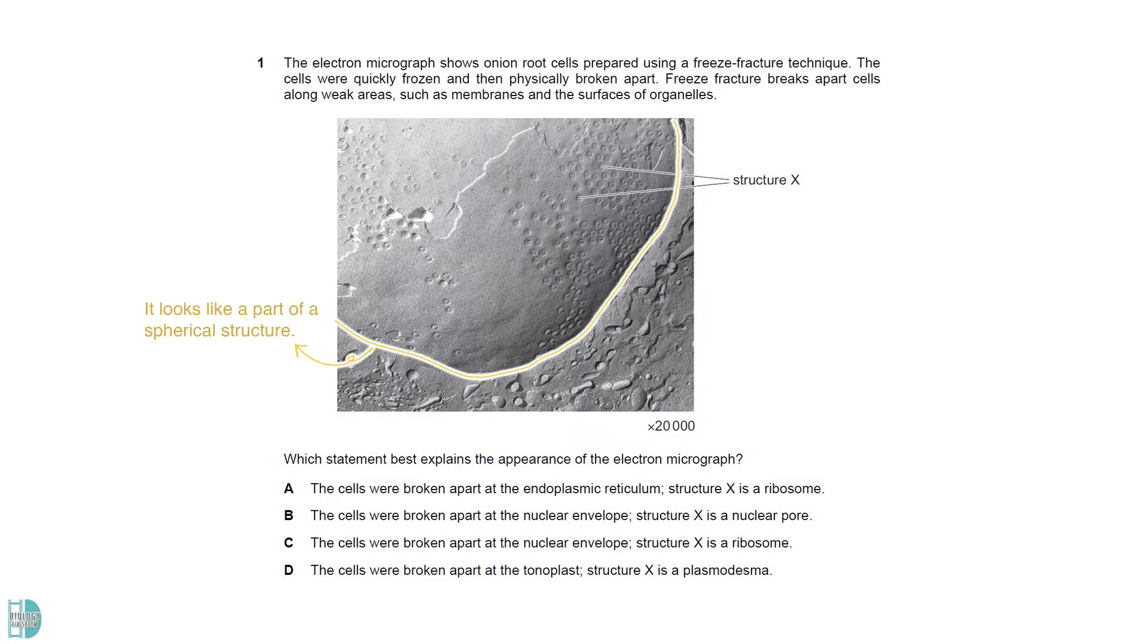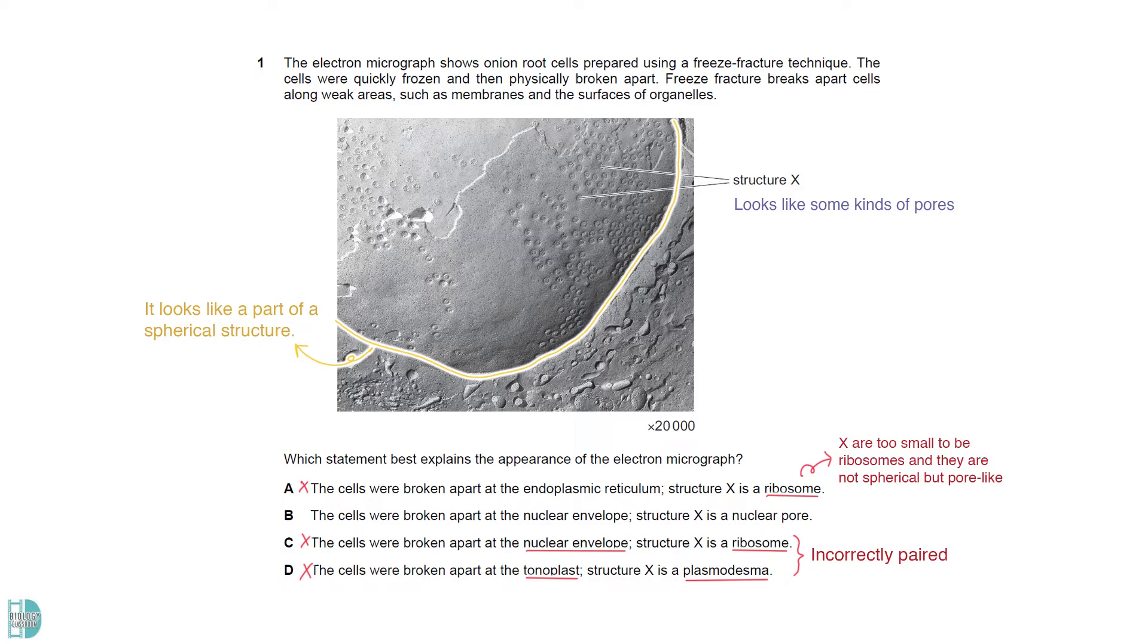The organelle looks like a part of a spherical structure. Structure X looks like pores. C and D are wrong because the nuclear envelope shouldn't have ribosomes on the surface while the tonoplast shouldn't have plasmodesmata. A is wrong as ribosomes should be larger than structure X and look spherical rather than pore-like. So the organelle is the nuclear envelope and X is the nuclear pores.